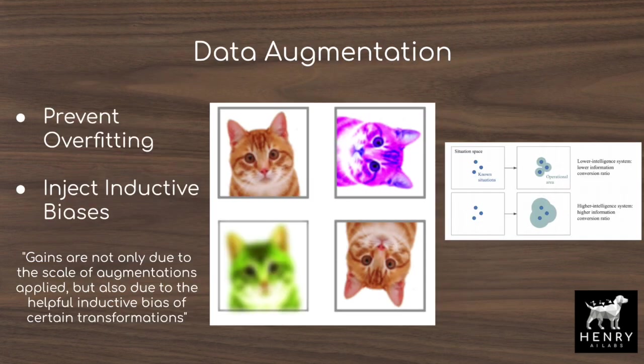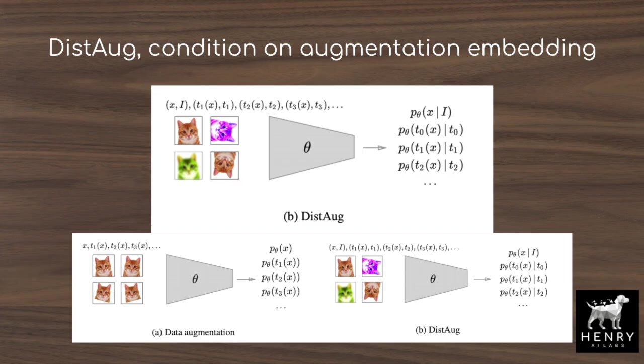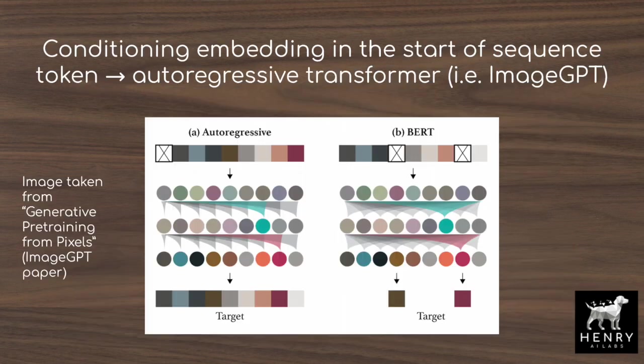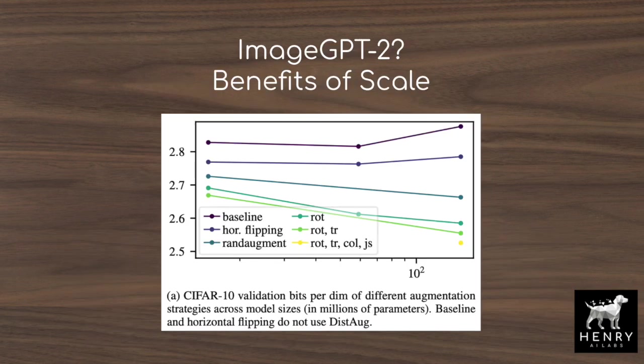Data augmentation describes semantic label-preserving transformations to data — like rotating it or making it more blue or red — that has been a massive workhorse for deep learning and computer vision. DistAug takes on a multitask approach to embed the transformation of the data into the start-of-sequence token, making it so the model can distinguish the true P of X data distribution compared to P of T of X after the data has been augmented or transformed.